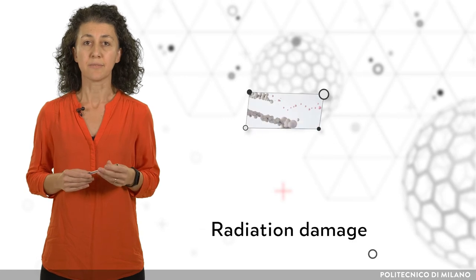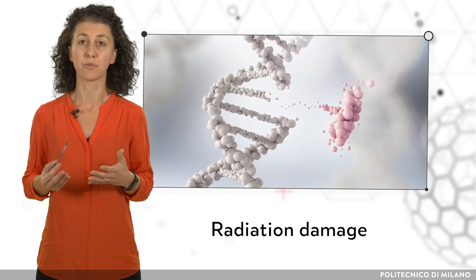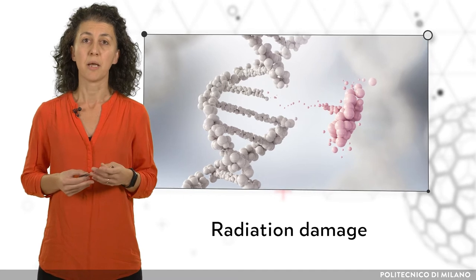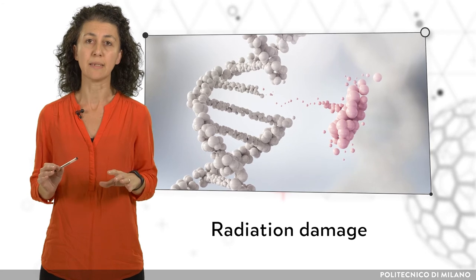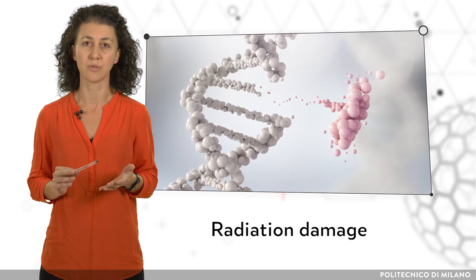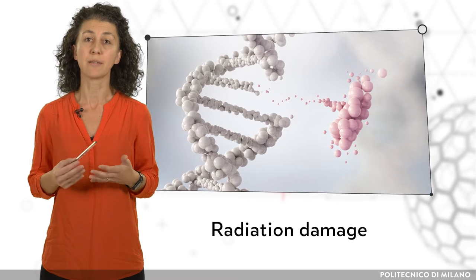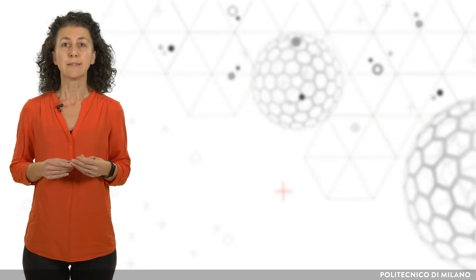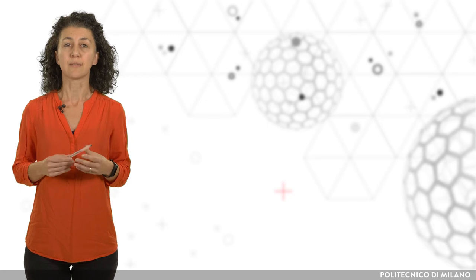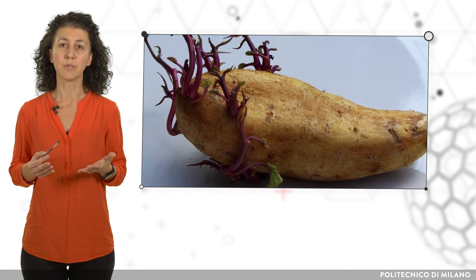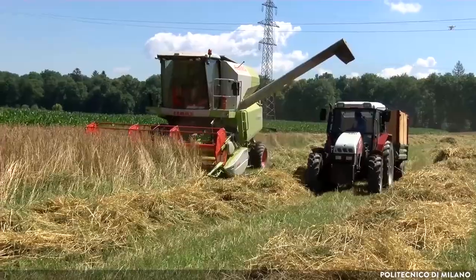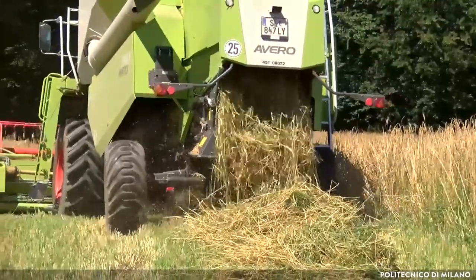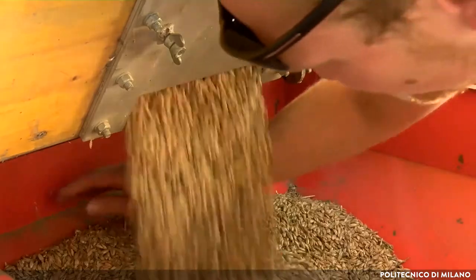Sterilization takes advantage of the high radiation sensitivity of microorganism DNA. By adopting suitable irradiation conditions, it is possible to completely eliminate the harmful pathogens in the sterilization process, but also to achieve other useful effects. Indeed, in the case of food, ionizing radiation could also be effective in delaying vegetable sprouting or to prevent insects growing in seeds. This could lead to economic benefits by reducing spoilage and increasing agricultural productivity.